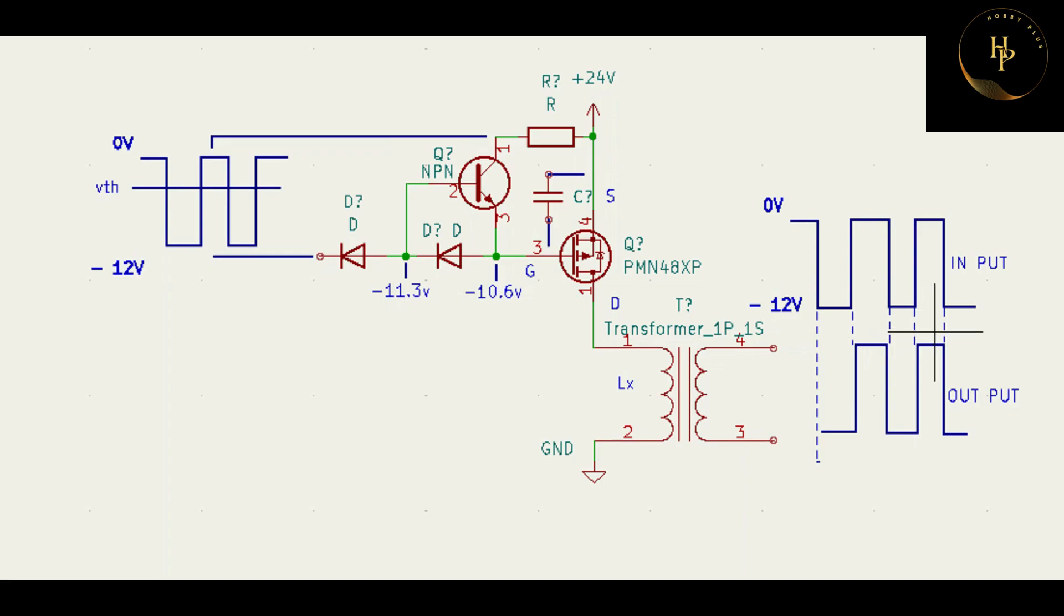Now, that is P-channel MOSFET, that is a transformer we call chopper transformer or load transformer. Here is an NPN transistor. Here is the pulse coming from pulse generator for switching circuit board or Arduino, whatever.